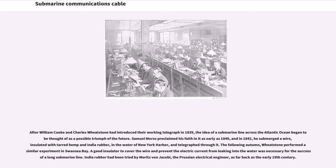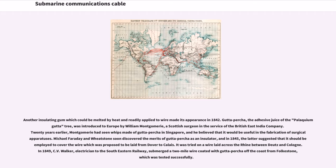A good insulator to cover the wire and prevent the electric current from leaking into the water was necessary for the success of a long submarine line. India rubber had been tried by Moritz von Jacobi, the Prussian electrical engineer, as far back as the early 19th century. Another insulating gum which could be melted by heat and readily applied to wire made its appearance in 1842. Gutta percha, the adhesive juice of the Palaquium gutta tree, was introduced to Europe by William Montgomery, a Scottish surgeon in the service of the British East India Company.